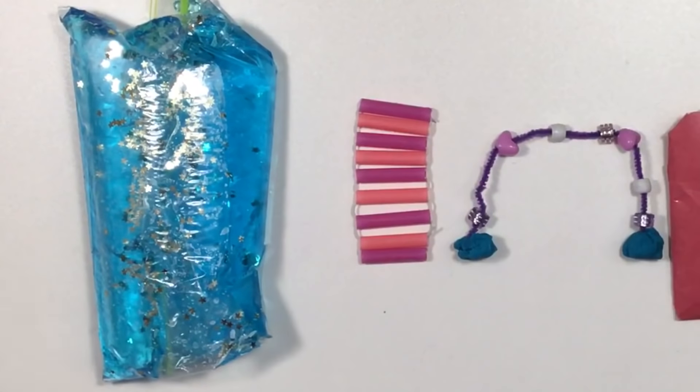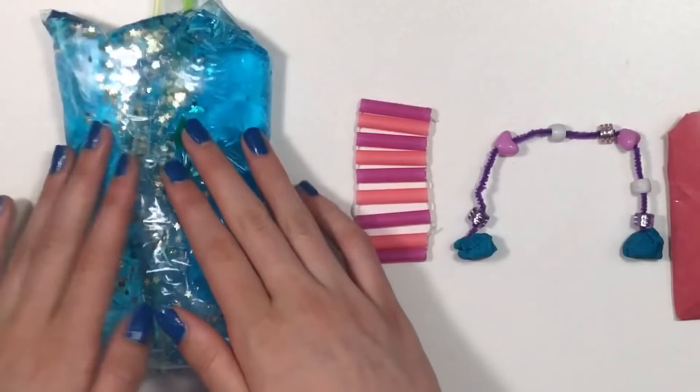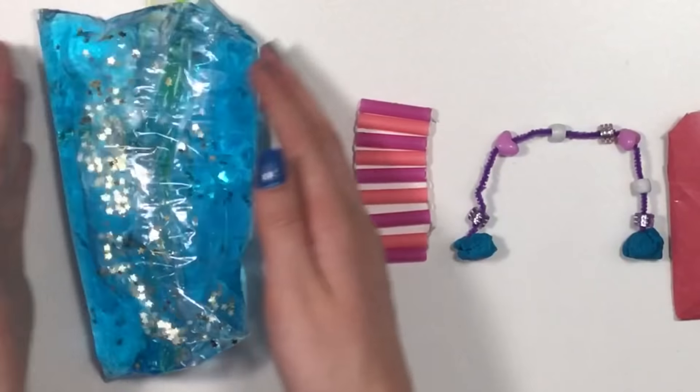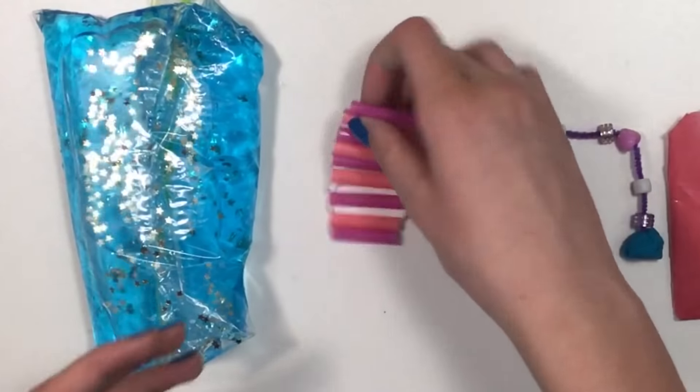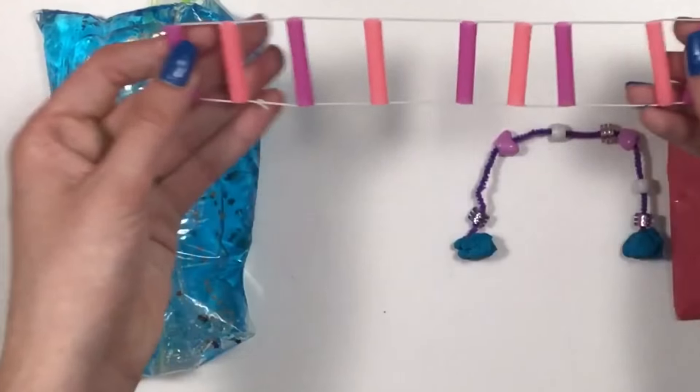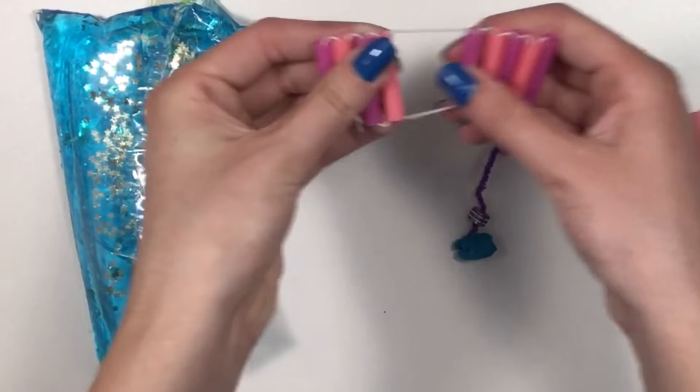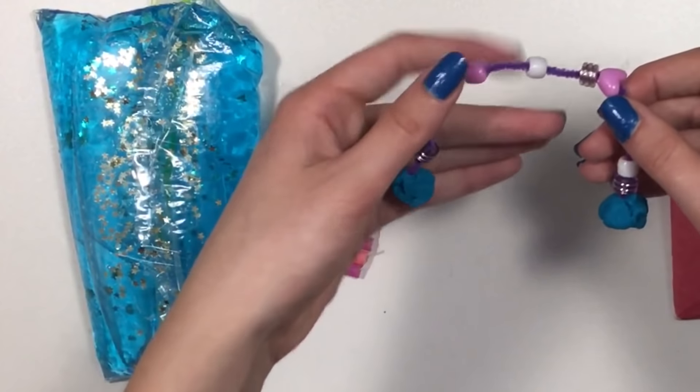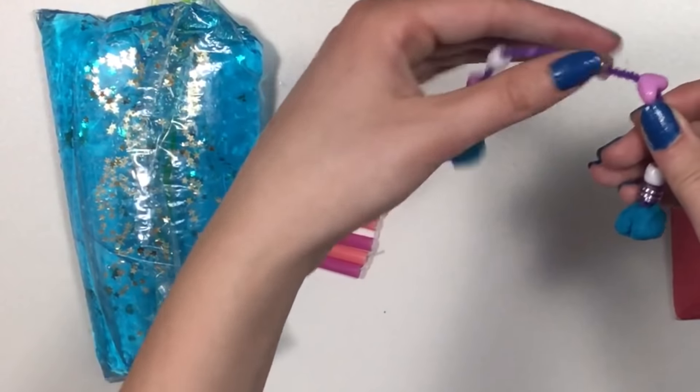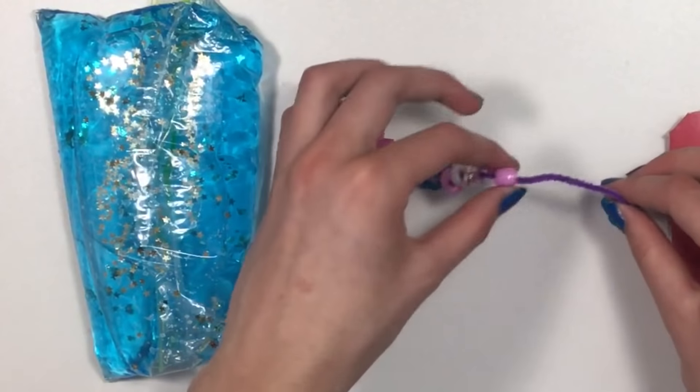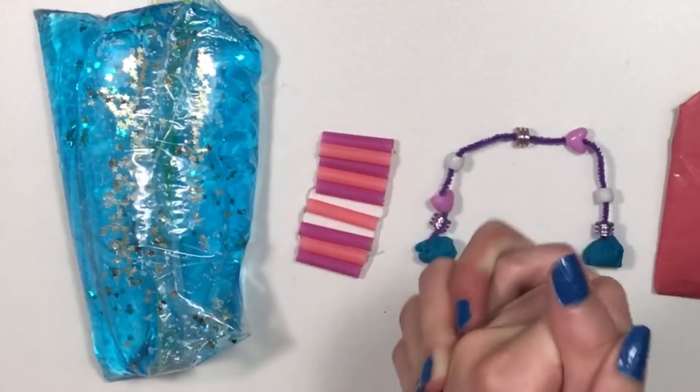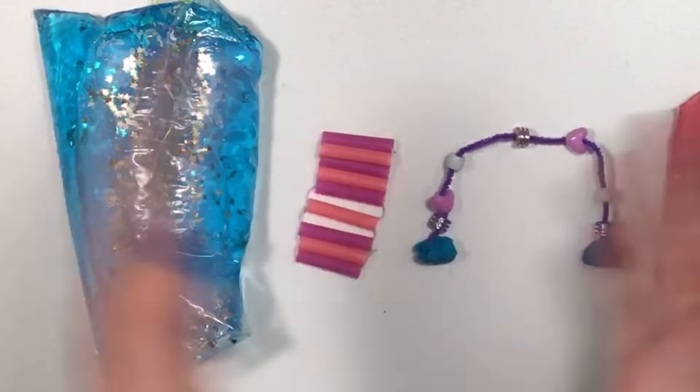I really like this fidget and I'd rate it a 10 out of 10. So right here are all the fidgets we made today: the water snake, super cool, I like this one. Then right here we have the tangle fidget. We have the bead slider. Comment down below which fidget toy was your favorite and which one you'll be trying out. My favorite is probably the tangle fidget.